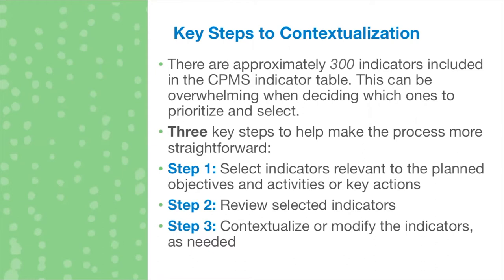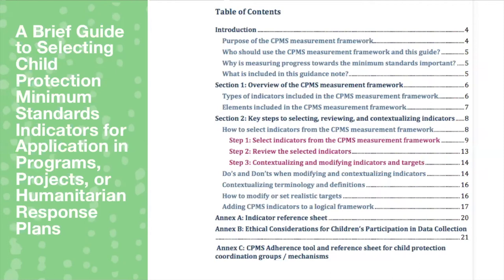The three key steps to selecting and contextualizing indicators are: firstly, to select the indicators relevant to your planned objectives and activities, or in line with the key actions; secondly, to review the selected indicators; and lastly, to contextualize or modify the indicators as needed. Here is a screenshot of the table of contents of a brief guidance document for selecting indicators for application in programs, projects, or humanitarian response plans.